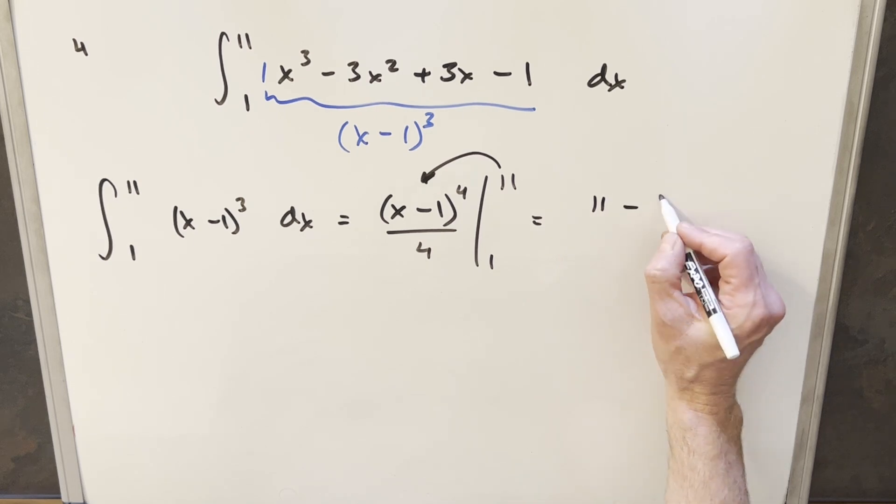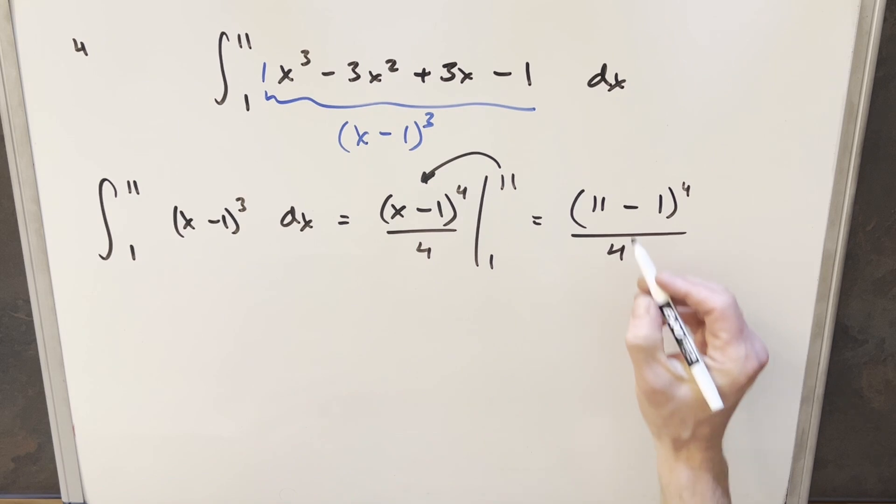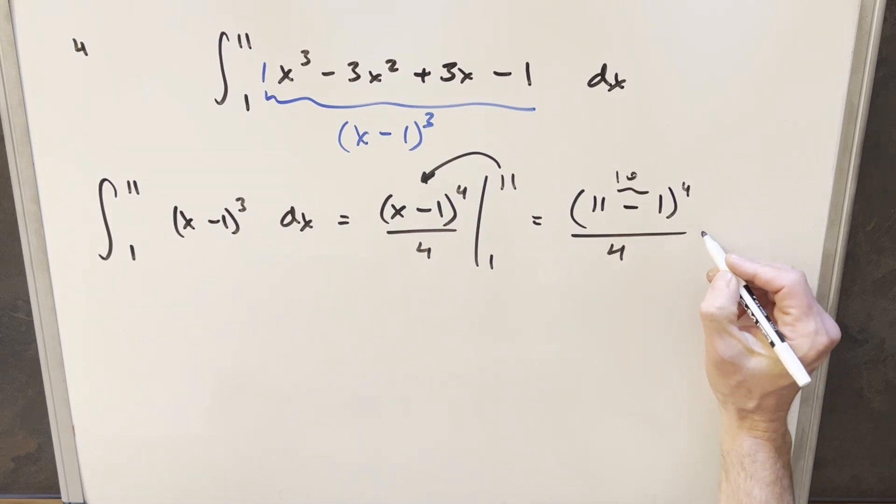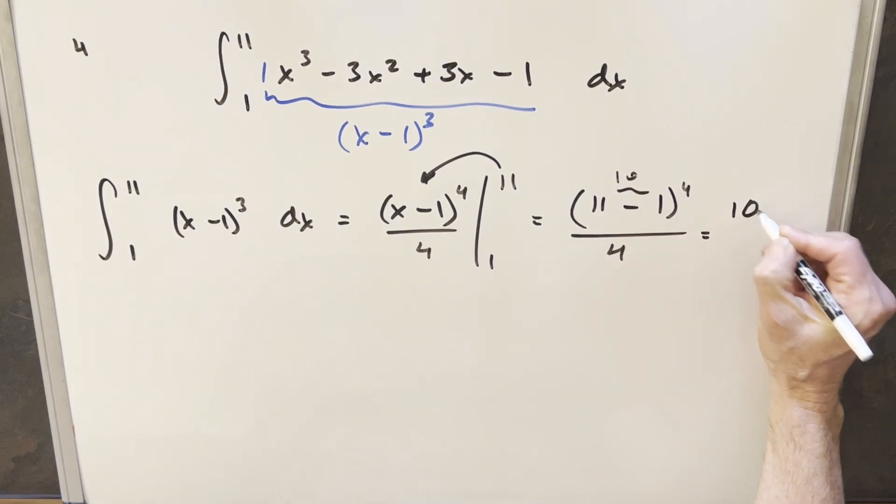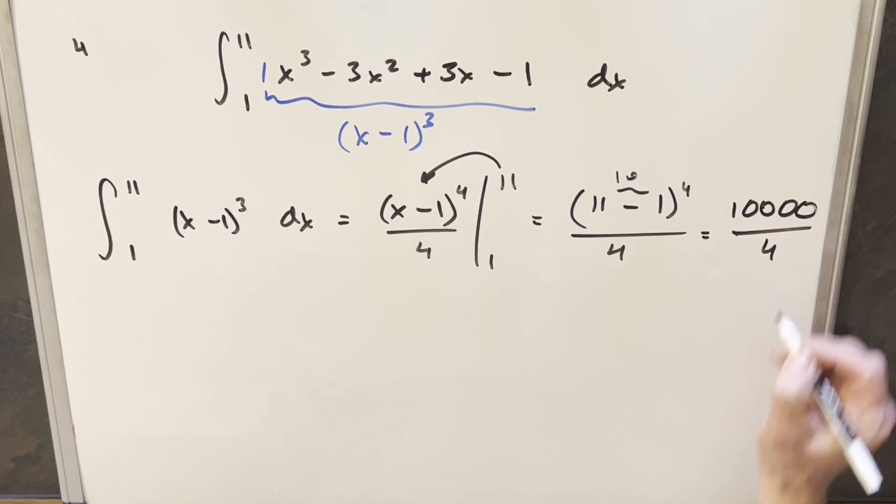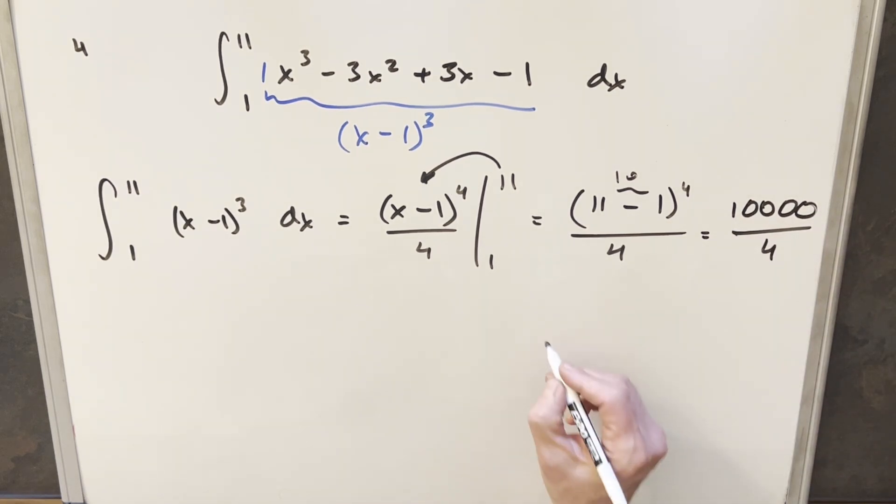So what we're going to get is 11 minus 1 to the 4th over 4, but this here is actually just going to be 10. So we're going to have 10 to the 4th, so we're going to have 10,000 over 4. So for a final solution to this thing we're just going to get 2,500.